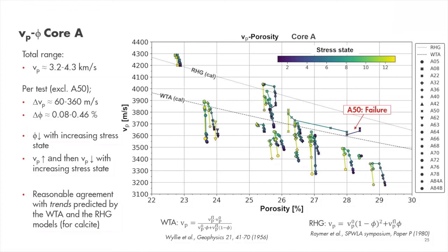We are currently analyzing which pore types show a stronger effect and which do not. Certainly one of the conclusions is the relevance of measuring at reservoir conditions, because Vp values under isostatic conditions could be very different from Vp at reservoir conditions — and for correlations with logs this can be very relevant.